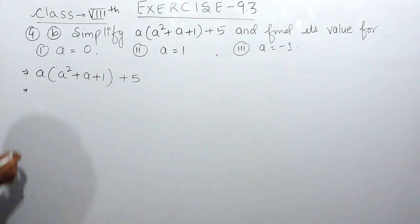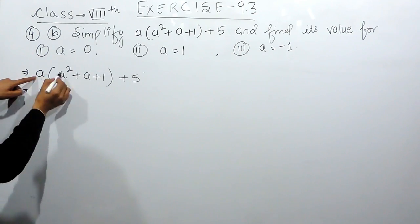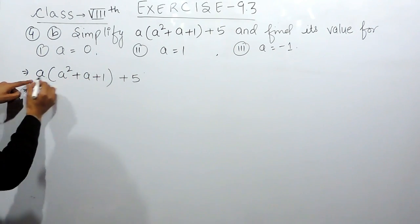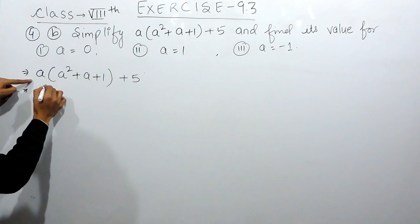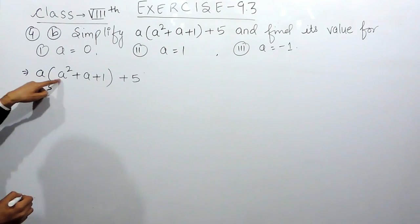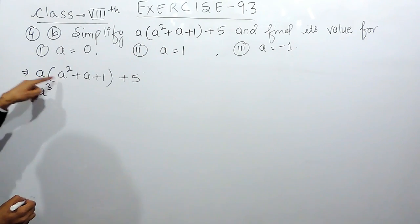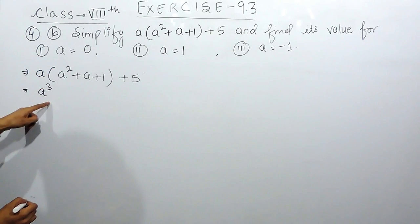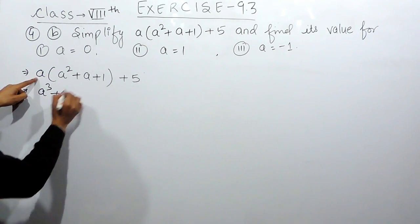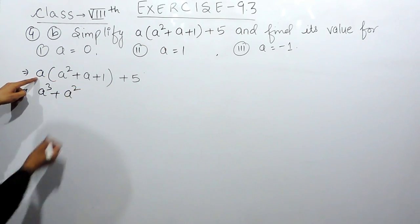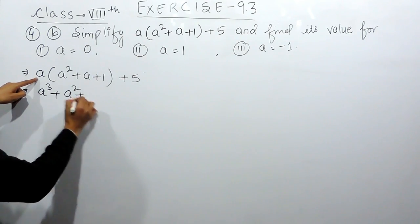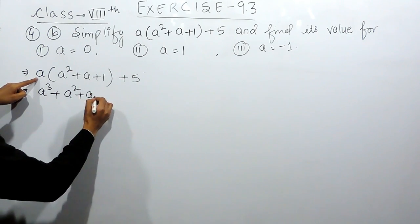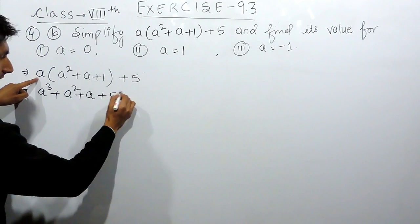First of all we have to open the bracket. For that we have to multiply this a with all 3 terms. So a multiplied by a squared will be a cubed because when the bases are same and it is multiplying, the powers get added. Similarly, a multiplied by a will be a squared and a multiplied by 1 will be a, and plus 5 will remain as it is.